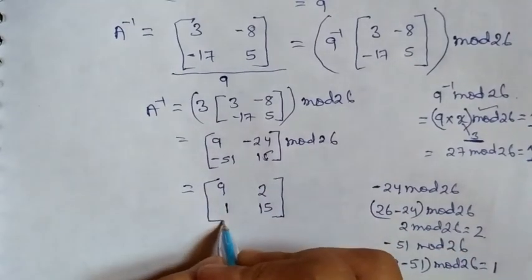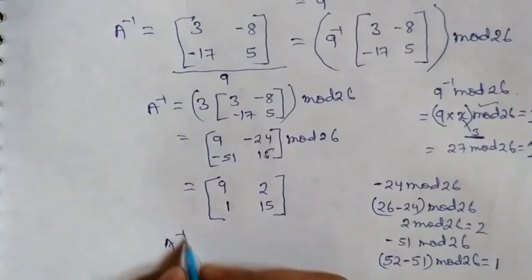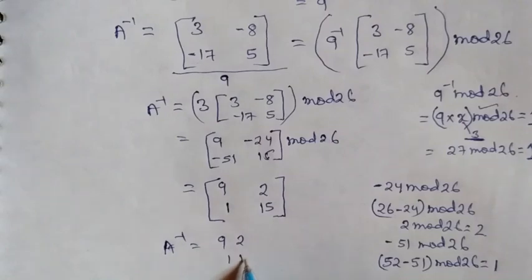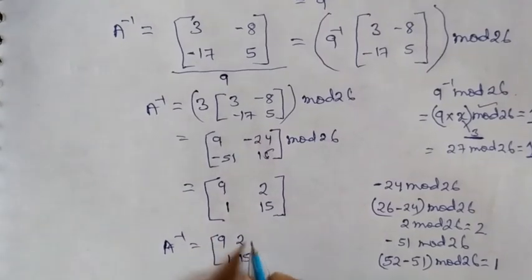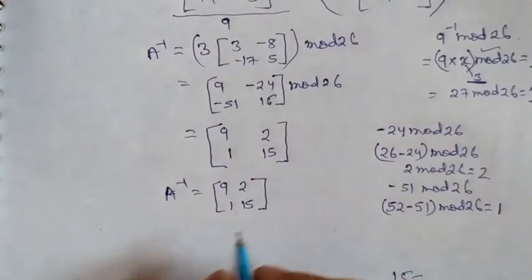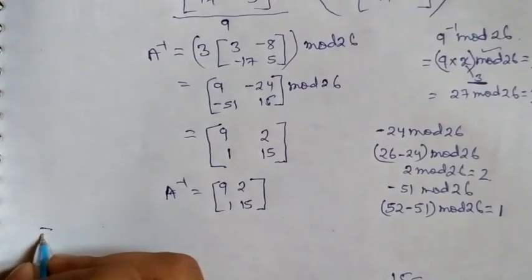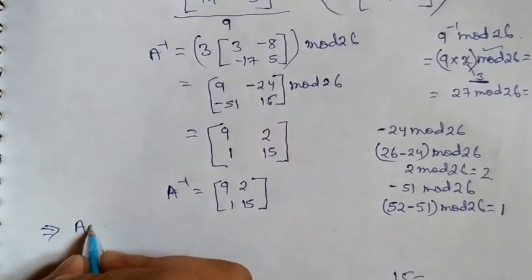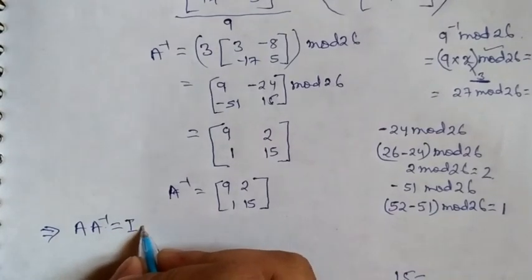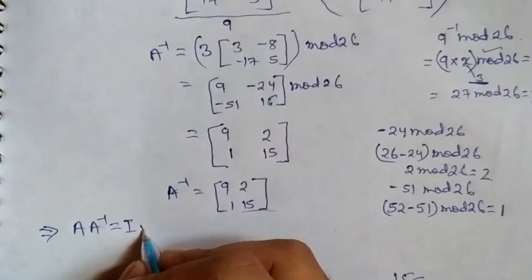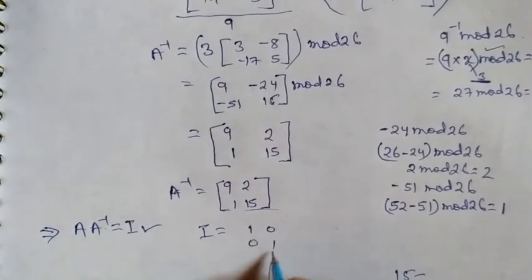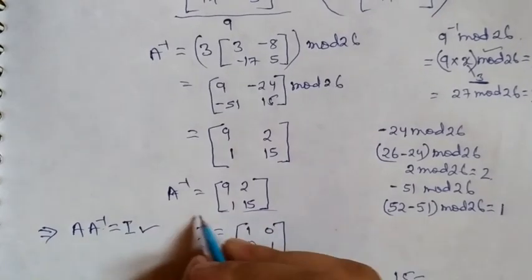So this is our inverse value. A inverse is 9, 2, 1, and 15. Now we can verify this value. A times A inverse will be the identity matrix. You can verify after calculating A inverse using this, where I is 1, 0, 0, 1 identity matrix. This is our answer.